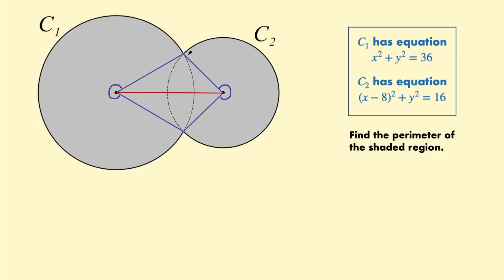Now I know the lengths of all of the sides of this triangle because I can read those from the equations of the circles. So the equation for C1 is x² + y² = 36. That tells me the radius is the square root of 36. So this radius here from the center to the circumference will be 6. The radius for C2 will be the square root of 16. That's 4.